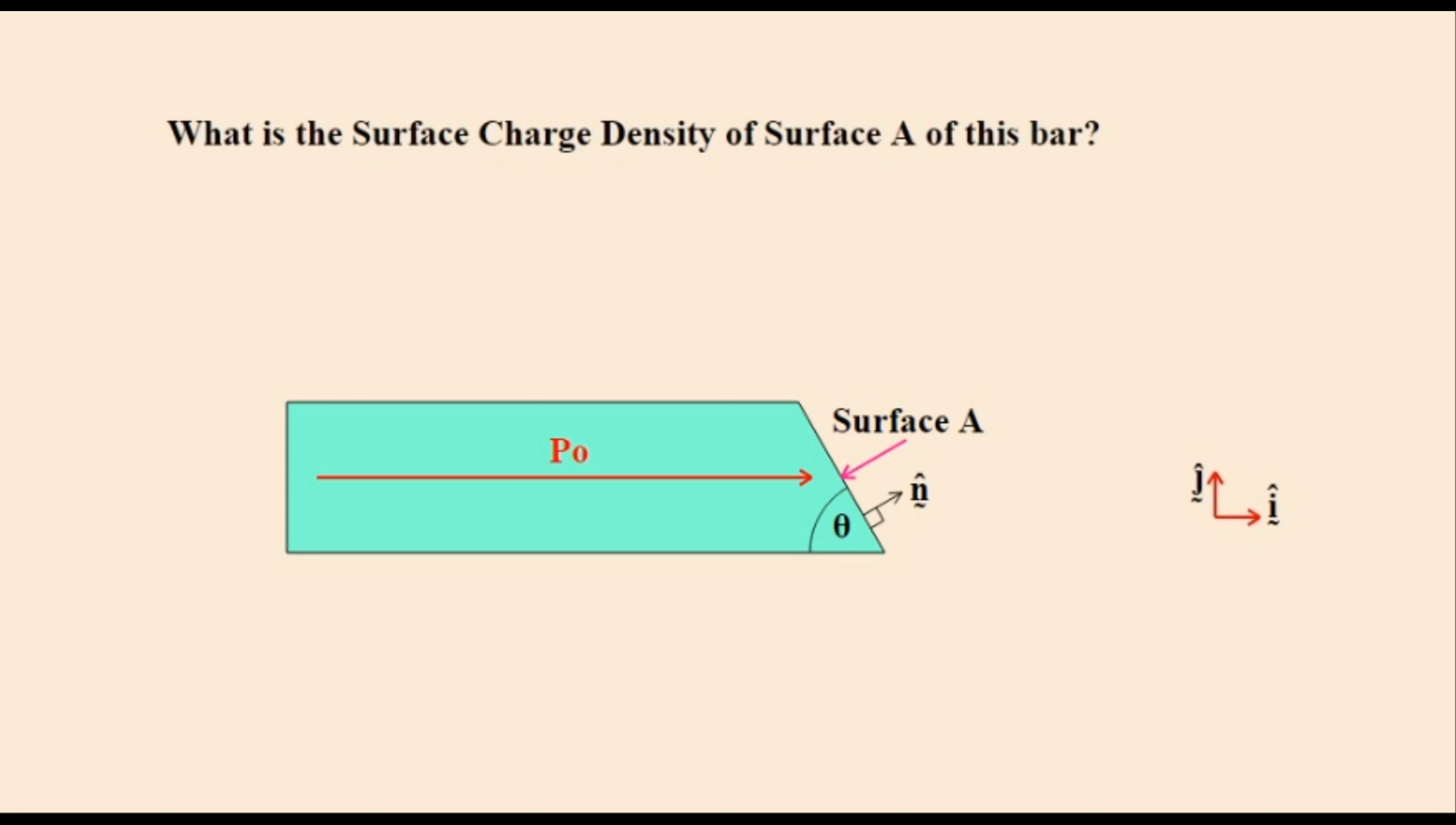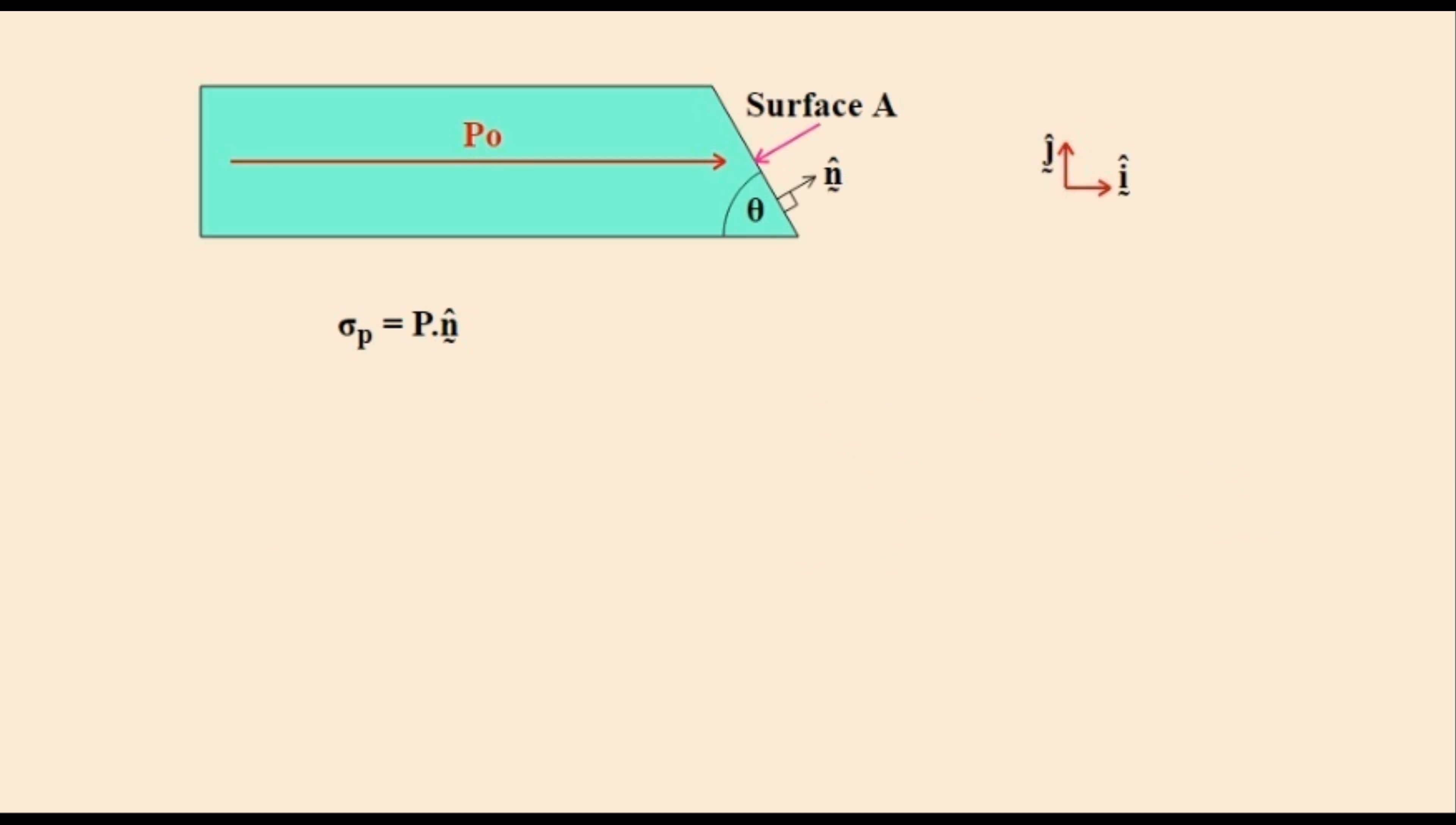The surface A is tilted at an angle of theta to the horizontal. The unit normal vector N is also shown here. The first thing to do when solving this problem is to use the surface charge density equation shown.